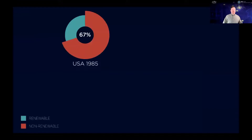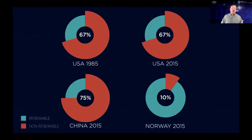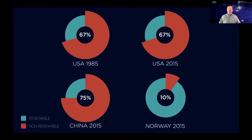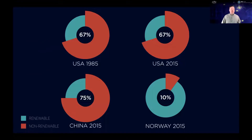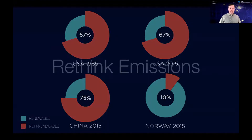Let's look at electricity generation. In the USA in 1985, about two-thirds or 67% of electricity came from non-renewable fossil fuel sources. Thirty years later in 2015, this looked pretty much the same — though there was a positive switch from coal to natural gas in many cases, which helps the carbon footprint. Today in 2021 it's a bit lower, maybe closer to 60-62%, but still a large portion. China in 2015 was 75%. Norway, on the other hand, is a special case: 90% of their electricity comes from renewable resources, mainly hydroelectric. So in Norway, driving an electric vehicle really is quite clean.